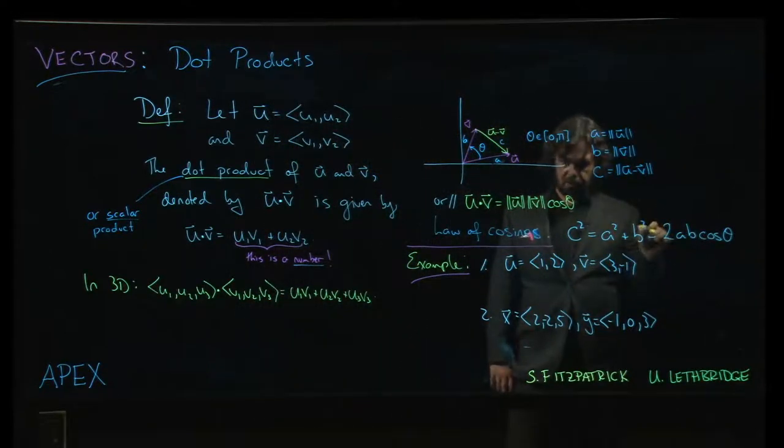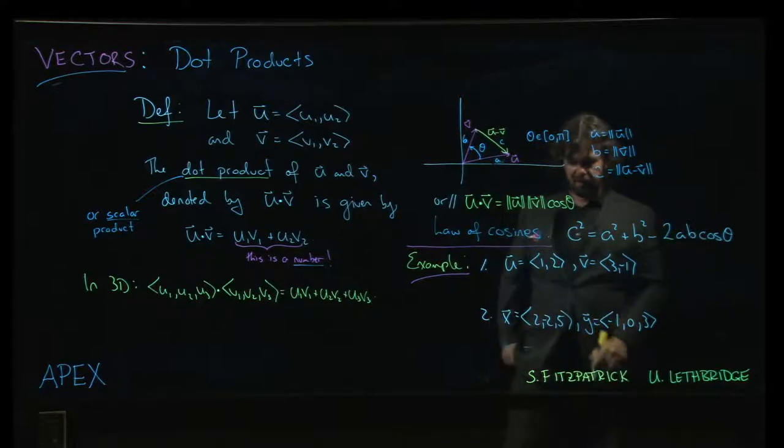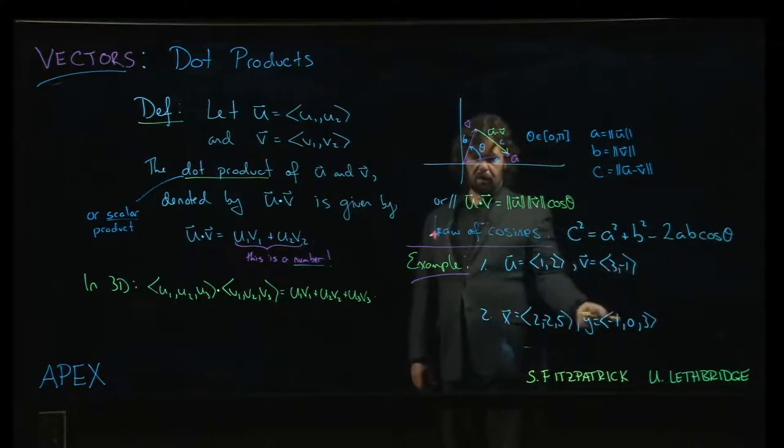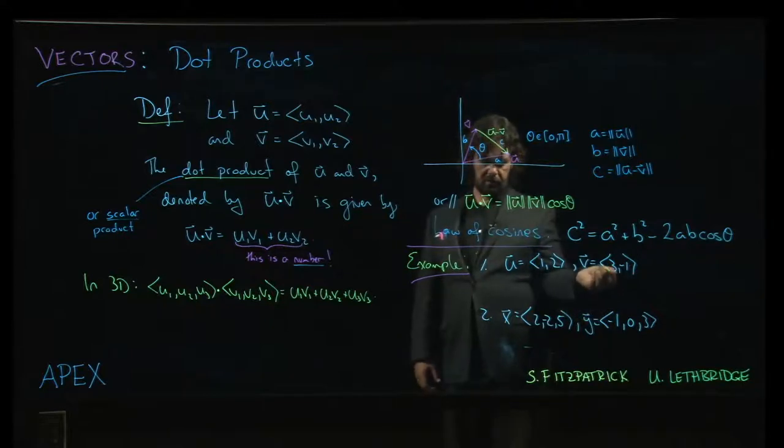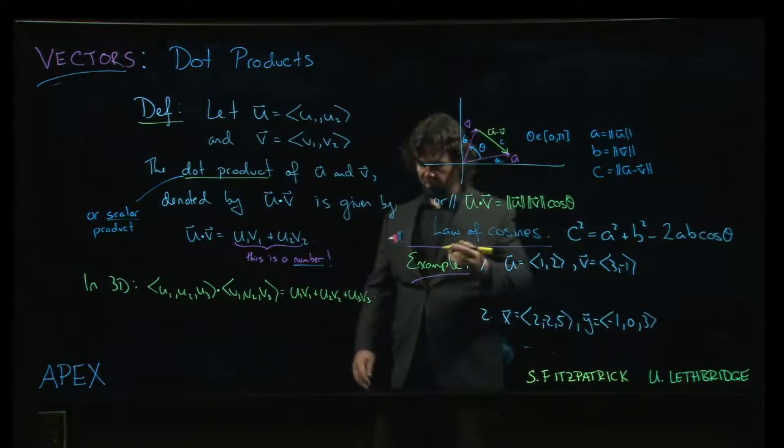but first, a quick computational example following the one in the textbook. We just want to compute the dot products of these pairs of vectors. One pair in two dimensions, one pair in three, just to get the hang of working with this formula.